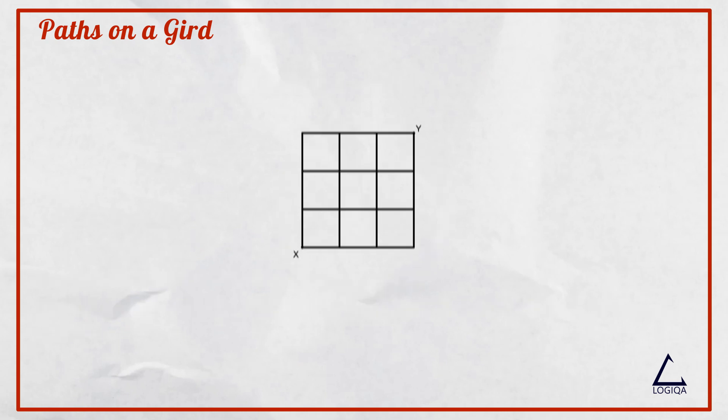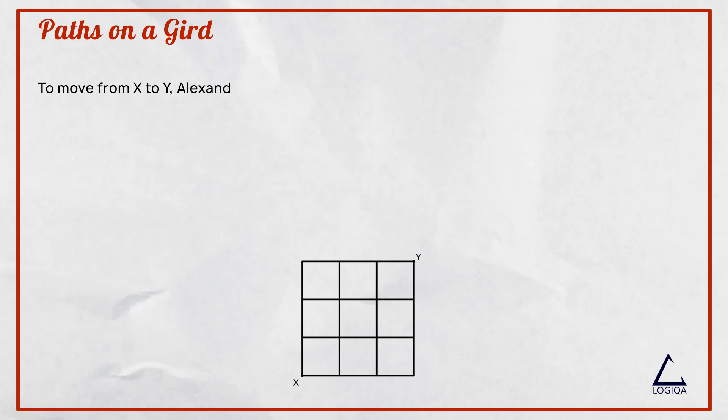To move from X to Y, Alexander will have to move right and up 3 times each.